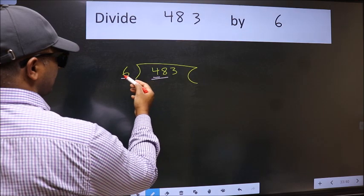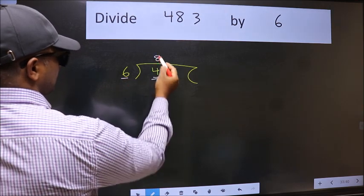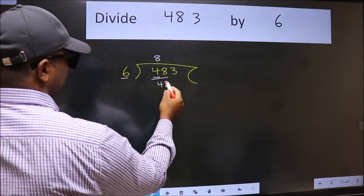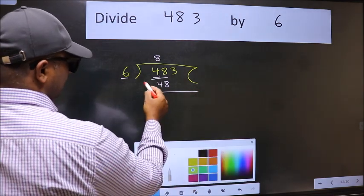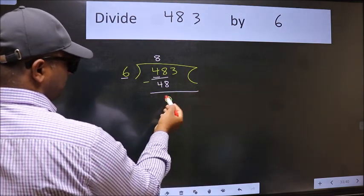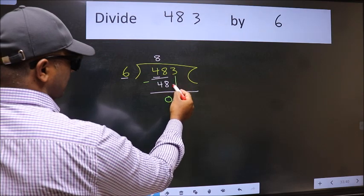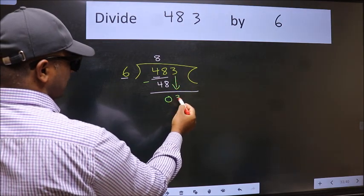So take 2 numbers, 48. When do we get 48 in 6 table? 6 times 8 is 48. Now we should subtract. We get 0. After this, bring down the beside number. So 3 down.